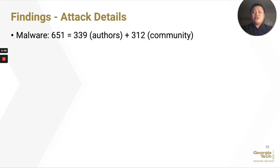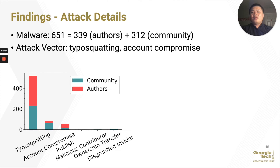For these 651 malware, we analyze them in multiple dimensions including attack vector, malicious behavior, and others. For attack vector, this plot shows the breakdown of malware by account. We note that typosquatting and direct publishing are popular, probably because you can directly publish anything with no review process. Account compromise is also popular — this is somewhat surprising, and is probably because weak credentials or compromised passwords are being used by package maintainers.